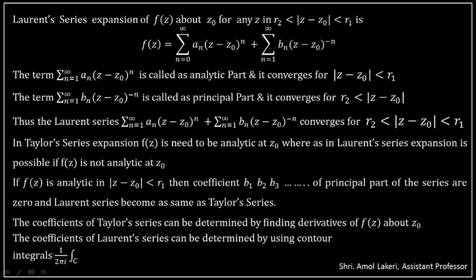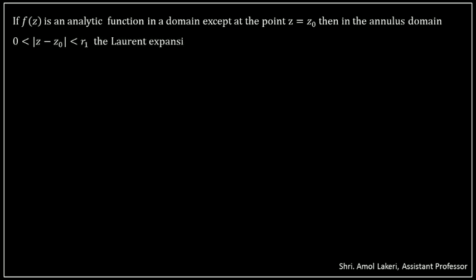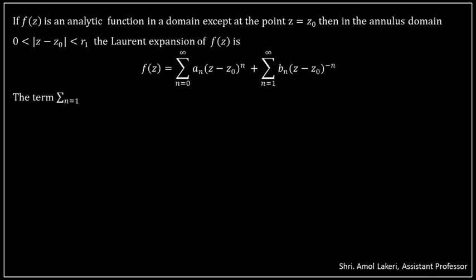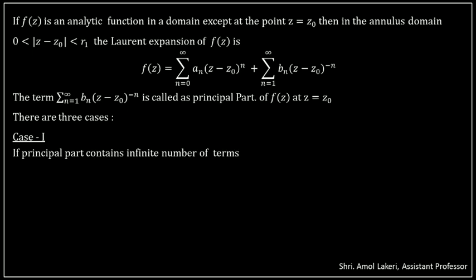In solving examples, we do not use the contour integral formula; instead we use a simple method. The last part of the session is singularity of a function using Laurent series. F of Z is analytic in a domain except at Z0. Then in the annular region, the Laurent series expansion contains an analytic part and a principal part. Depending upon the number of terms in the principal part, there are three possible cases. Case 1: if the principal part contains an infinite number of terms, then Z0 is called an essential isolated singularity of f of Z.